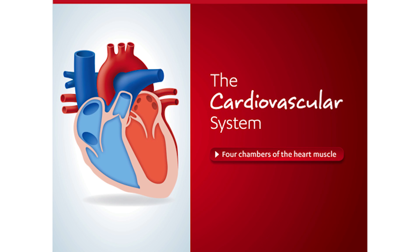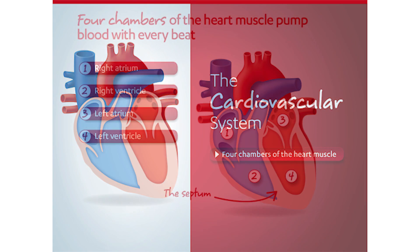The heart is a pump that circulates blood, oxygen, and other nutrients to the body. There are four parts or chambers of the heart muscle. The top chambers of the heart are the atria, and the lower chambers are the ventricles. Both the atria and the ventricles are further divided into right and left sides. Each chamber of the heart has a different job.